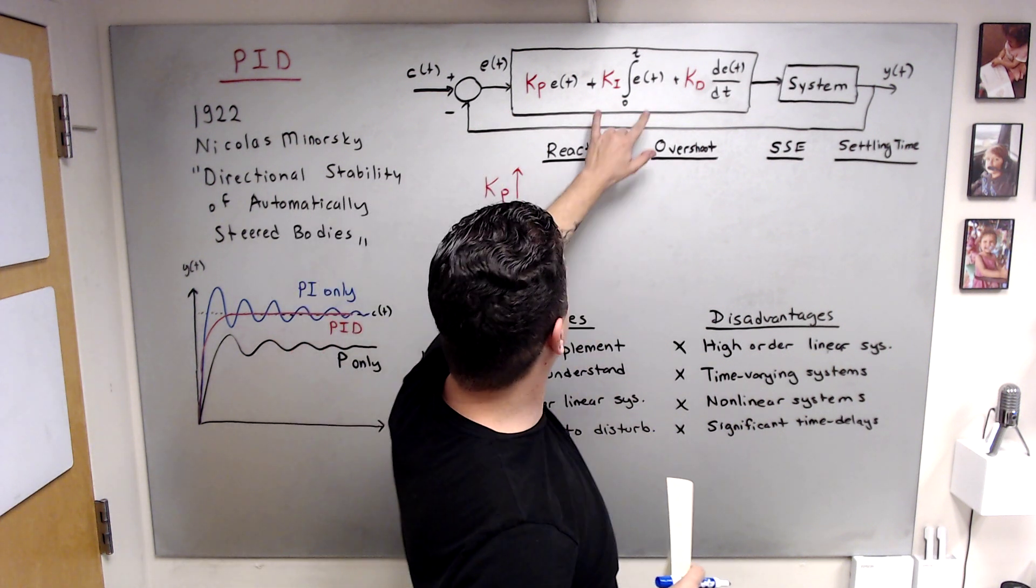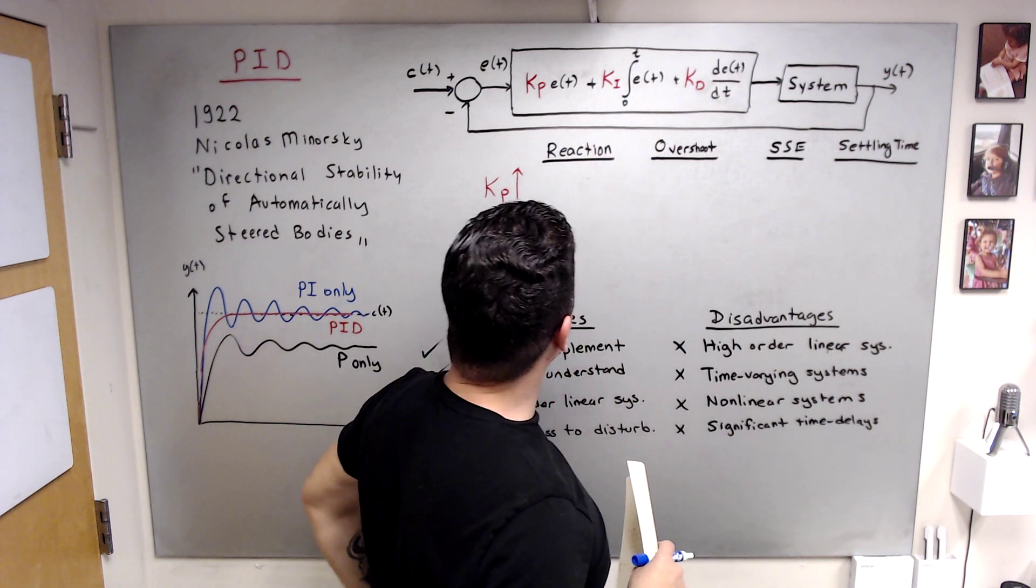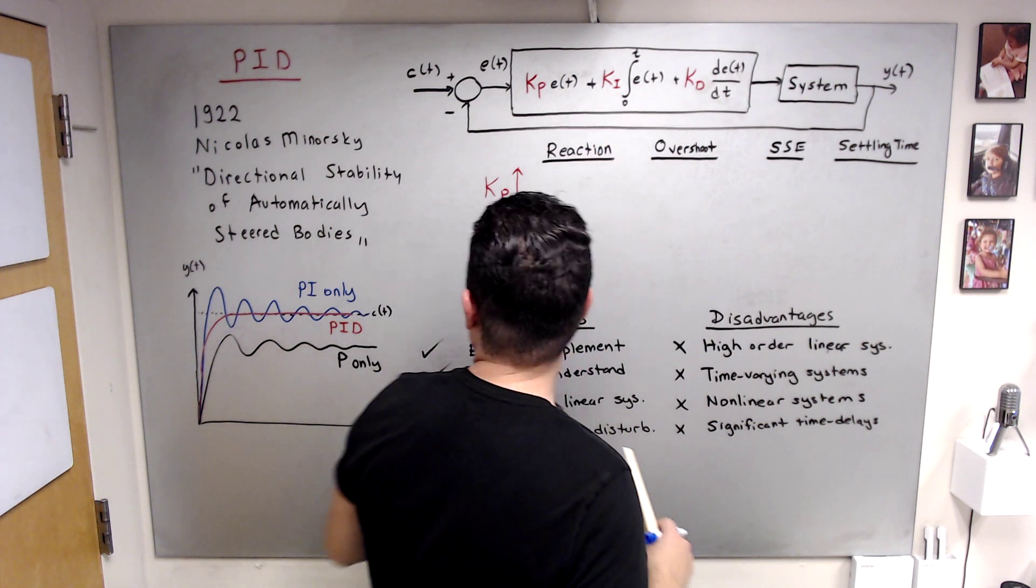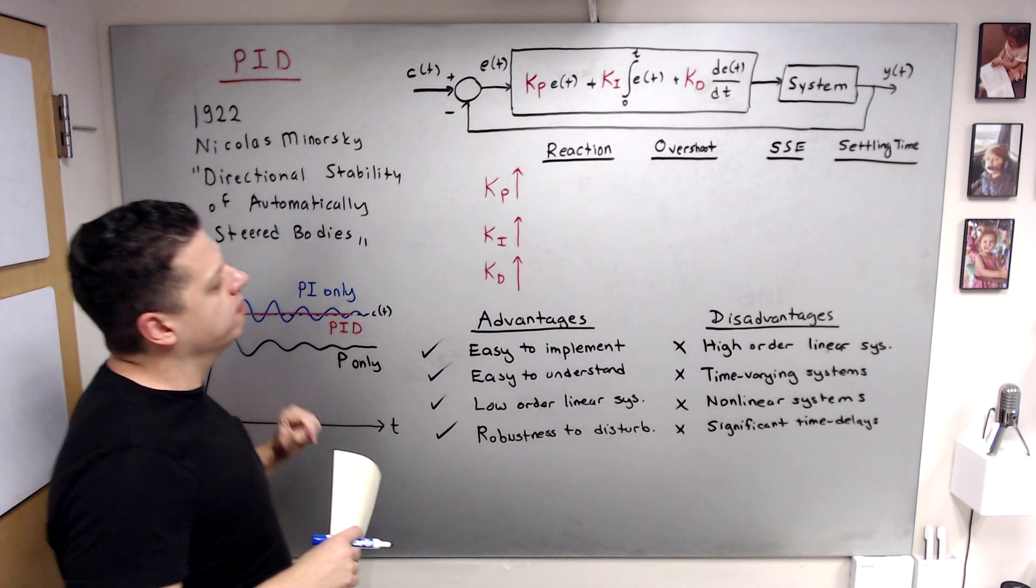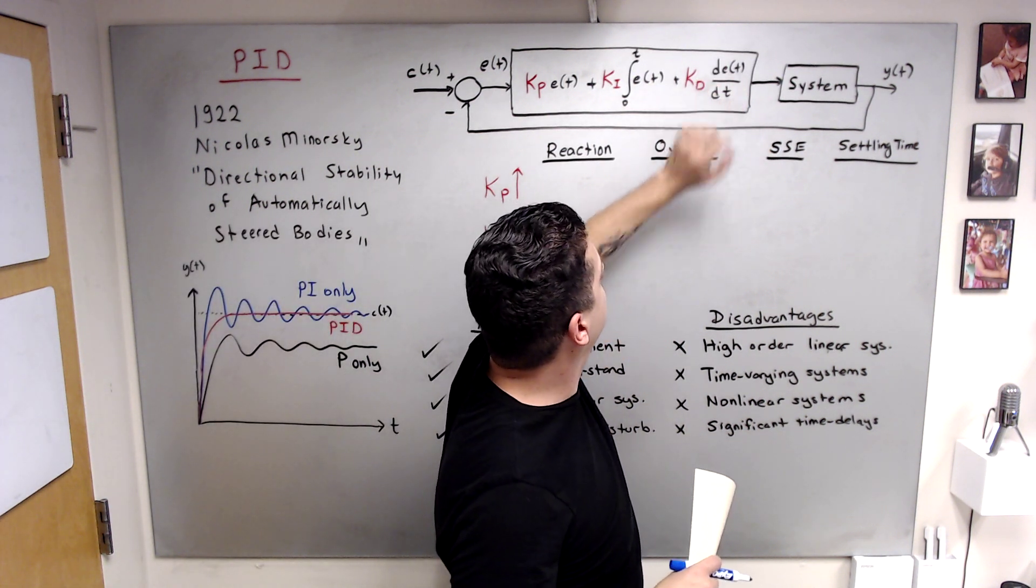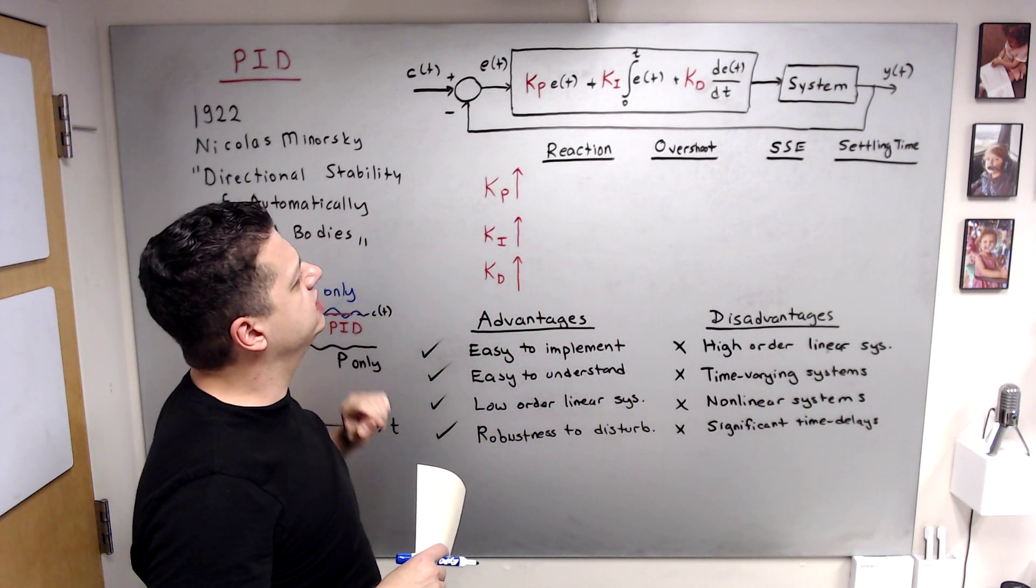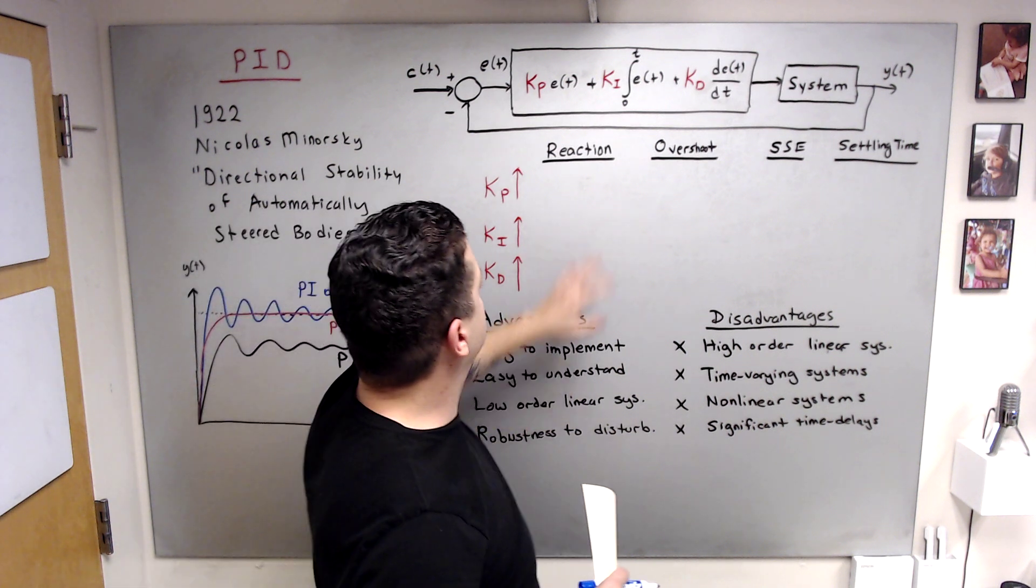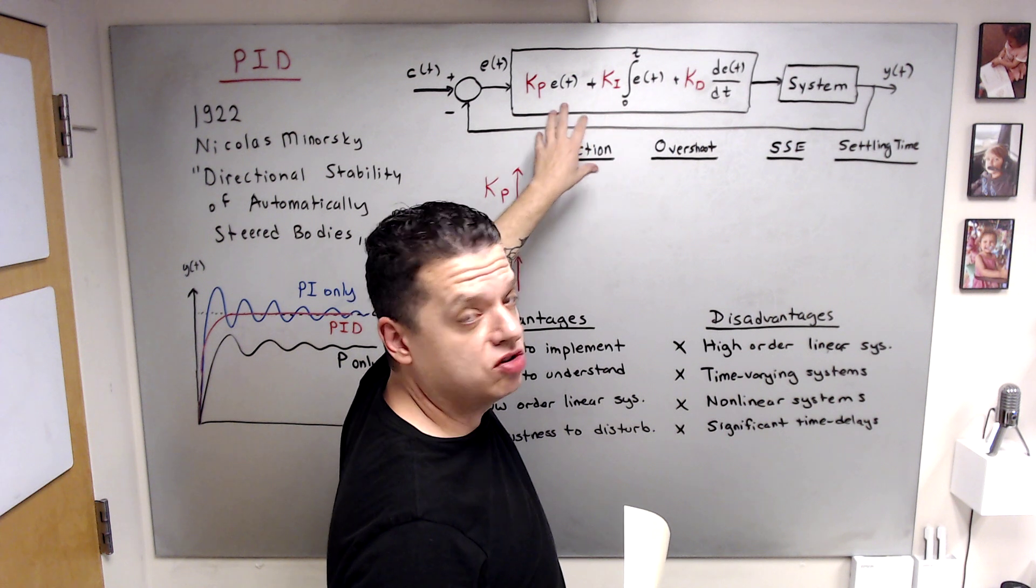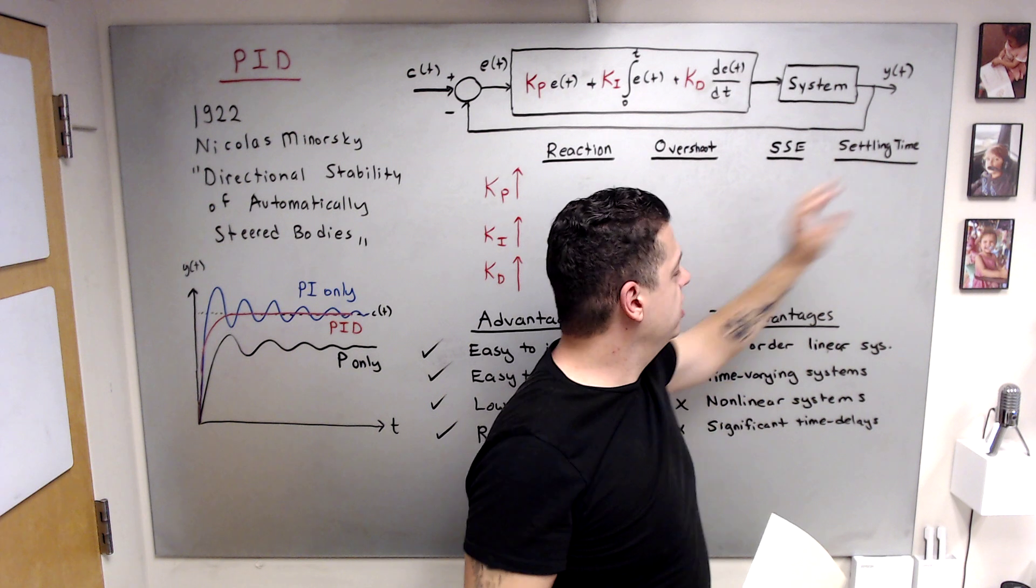The second term is the integral, you integrate the error and multiply it by the second gain Ki. The third one is the derivative term, you are taking the derivative of error multiplied by the Kd, and we're going to discuss all Ki and Kd's effect on systems reaction, which is what I mean by reaction within the context of PID's rise time, overshoot, steady state error, and settling time.